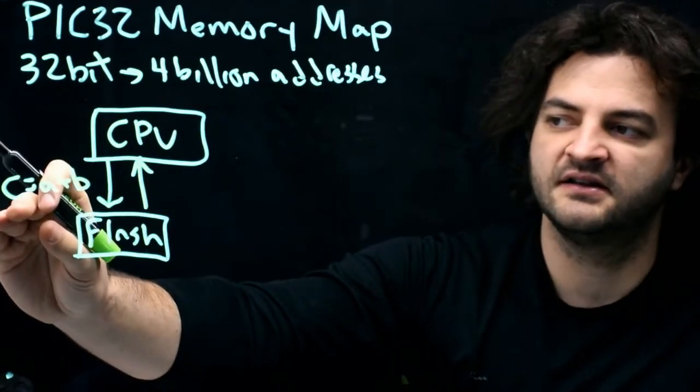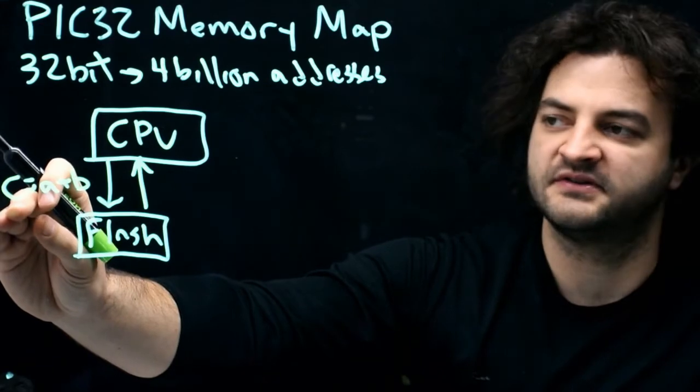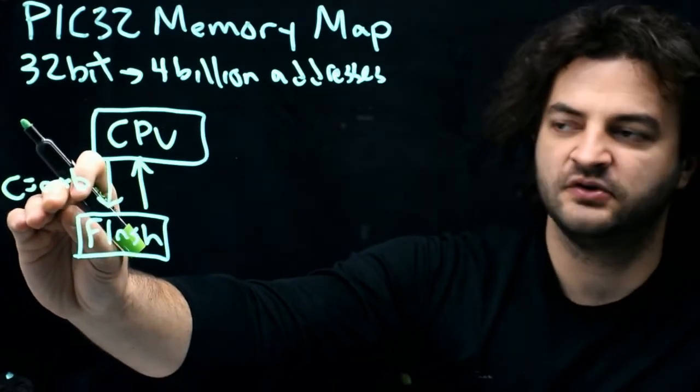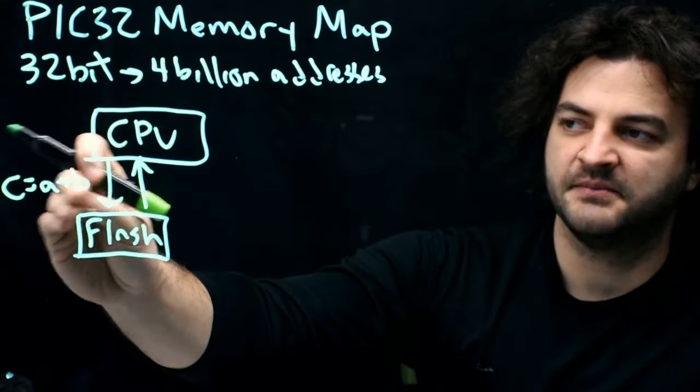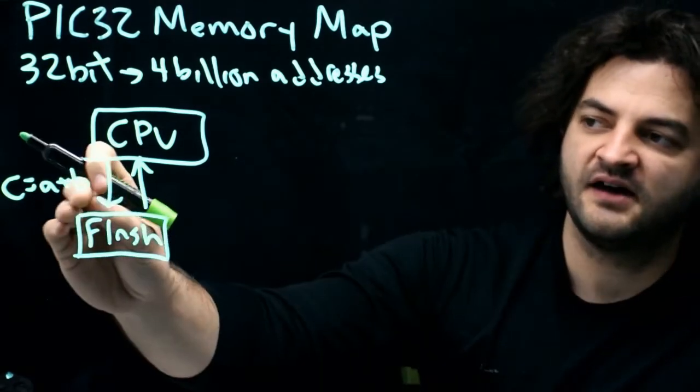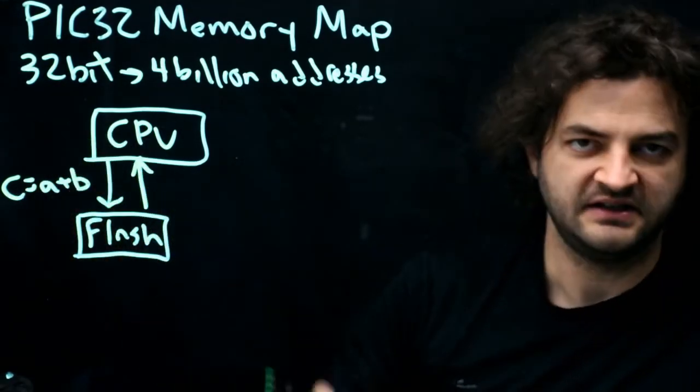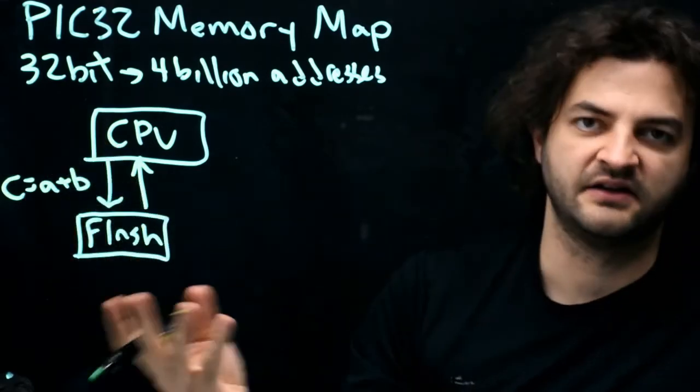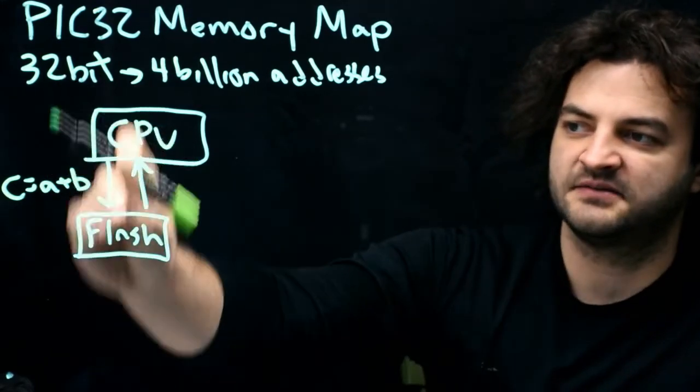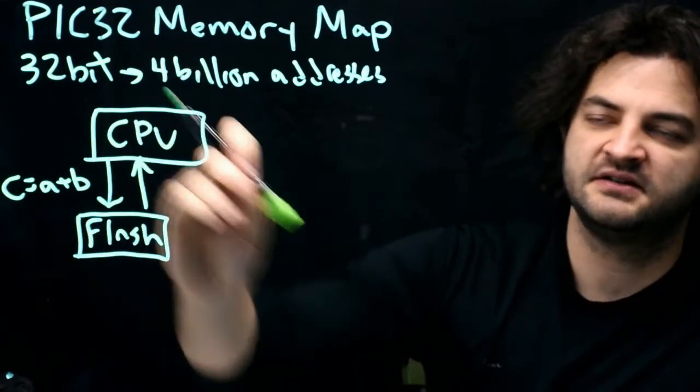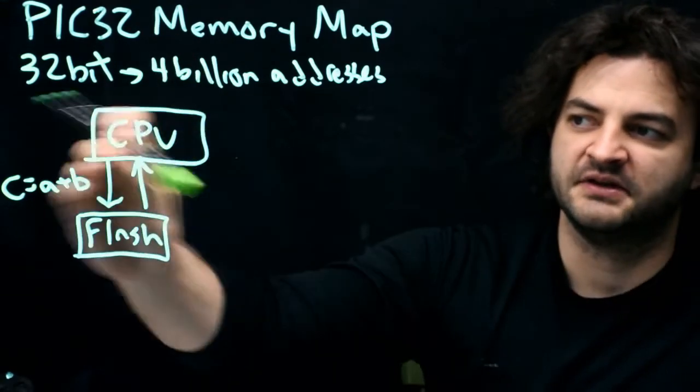It says, let's allocate some memory to store this variable C. Let's go fetch the value of A. Let's fetch the value of B. Let's sum them into some temporary space. And then let's copy that summation into C. So this one line of C turns into many lines of machine code. And each of them has to be grabbed from flash and then put into the CPU so they can run through them and do all this stuff.